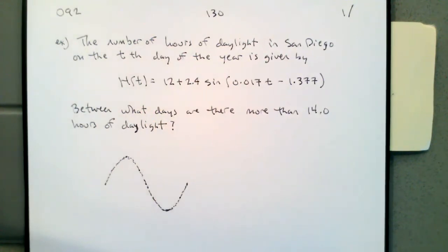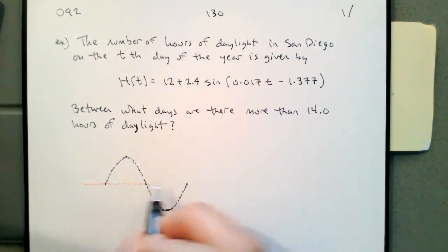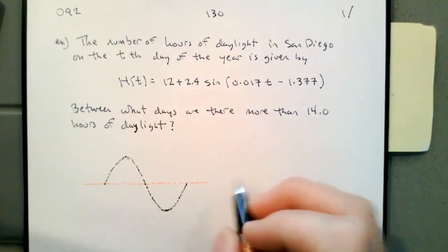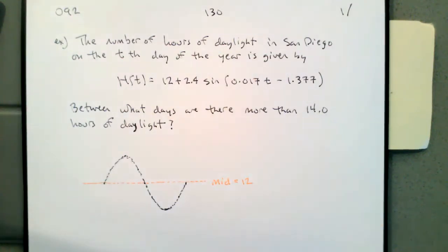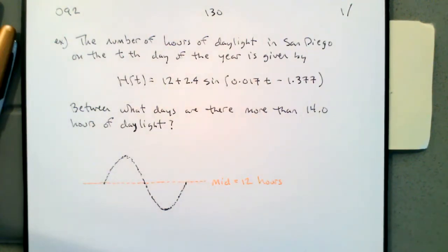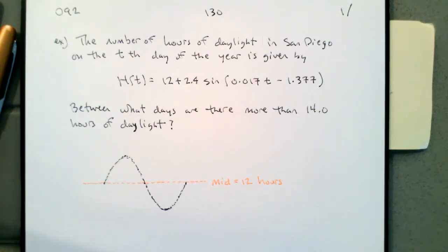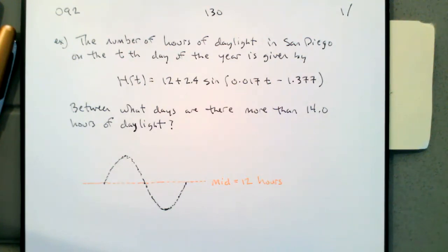The 12 is the constant that locates the middle of our graph, so the midline is at 12 hours. Since this function represents hours of daylight, it makes sense that in the middle there's going to be 12 hours of daylight, and then we'll have either more or less than that. Things have been rounded off — San Diego is a little above the equator — but we're just creating a model, so it's reasonable to put the middle at 12 hours.